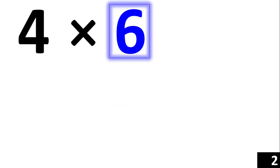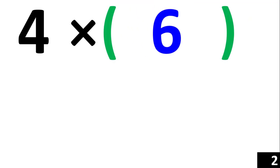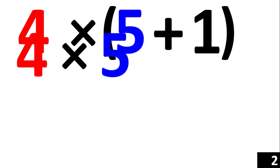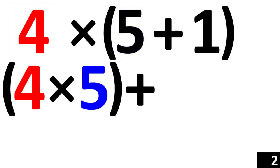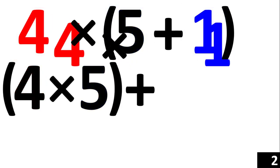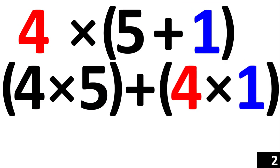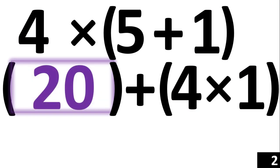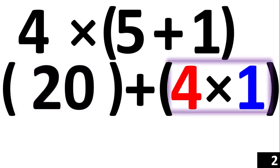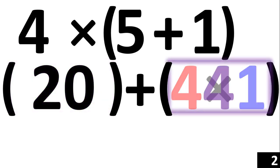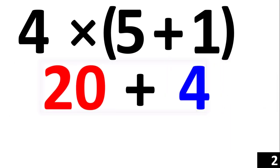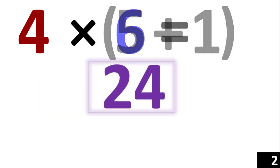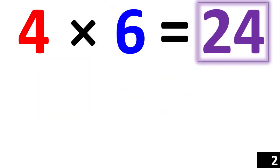4 times 6. 6 is the same thing as 5 plus 1. Using the distributive property, we now have 4 times 5 plus 4 times 1. 4 times 5 is equal to 20, and 4 times 1 is equal to 4. Adding them together, 20 plus 4 is equal to 24. Therefore, 4 times 6 is equal to 24.